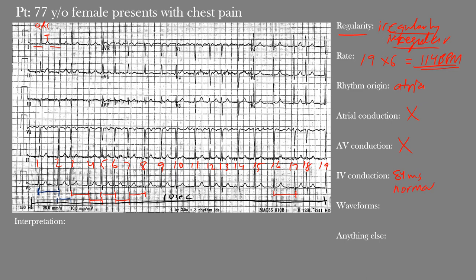How about the waveforms? P waves are not present. The T waves are present, asymmetric, and appear normal. The PR segment and interval cannot be assessed without P waves. The ST segment does not appear to be elevated or depressed anywhere. The QT interval appears within normal limits. There are no major waveform abnormalities that we can see here.